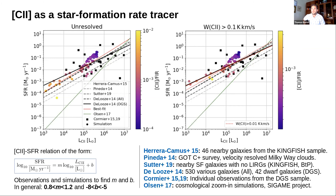Observational star formation rates come with error bars that may be large depending on the method used. The approach taken here is a statistical one, which is reasonable. The goal is to compare simulation outputs with observed trends rather than exact individual values.